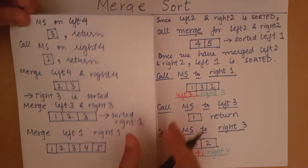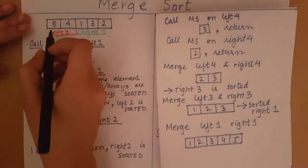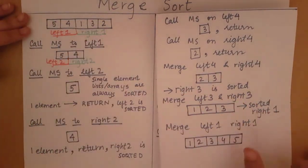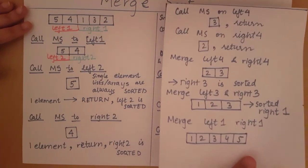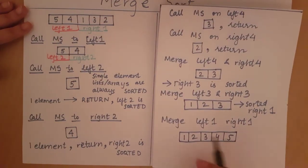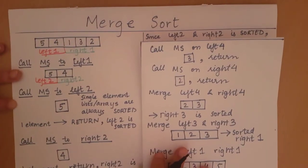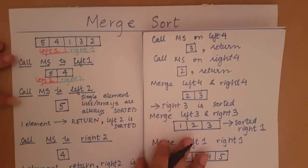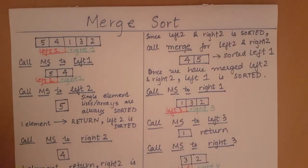As you can see, from an unsorted list we have taken all these steps and arrived at a sorted list. This is how the merge sort algorithm is going to work.